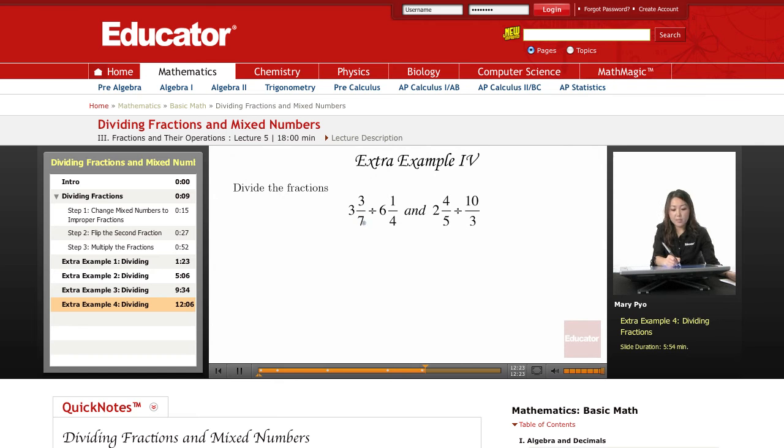I take my denominator of 7, multiply it to my whole number, and then add the numerator. So 7 times 3 is 21, plus 3 is 24, and then 4 times 6 is 24, plus 1 is 25.